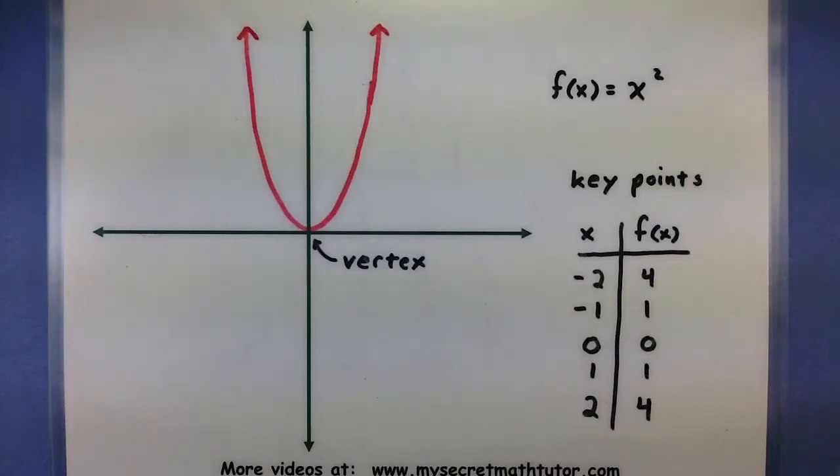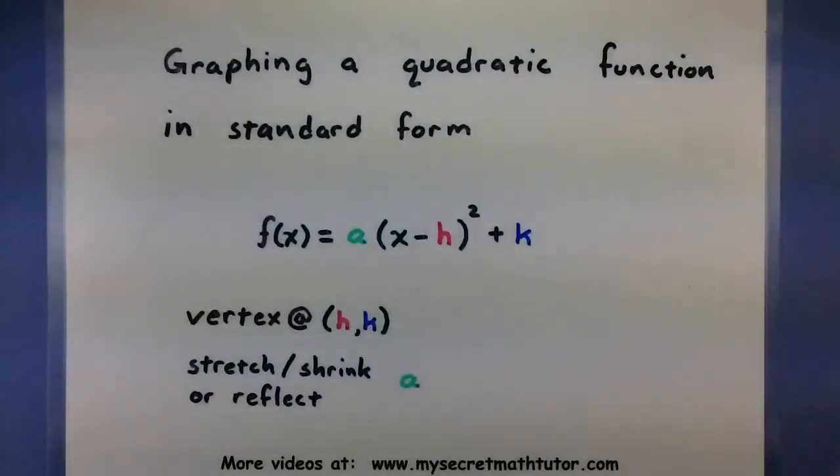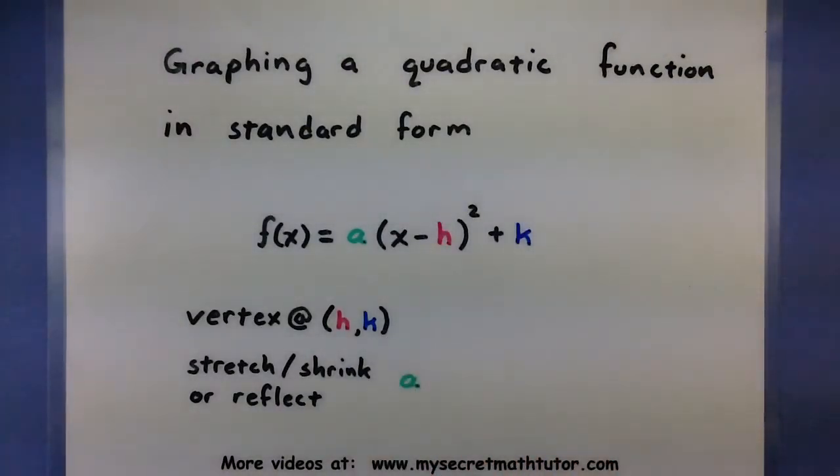So it's really taking this guy and then starting to stretch it, shrink it, or shift it to another spot. So that's all this formula is really trying to tell us to do. So we start with an x squared, we shift it around to a new point so its vertex is now at h,k, and this a will stretch it, shrink it, flip it.